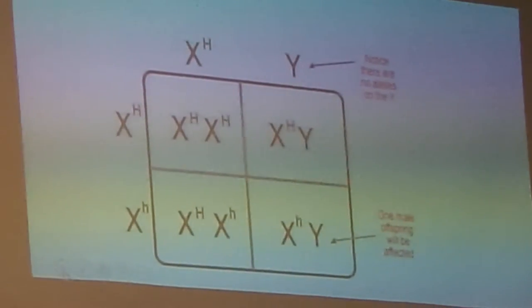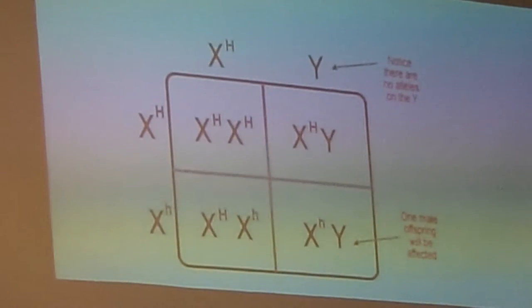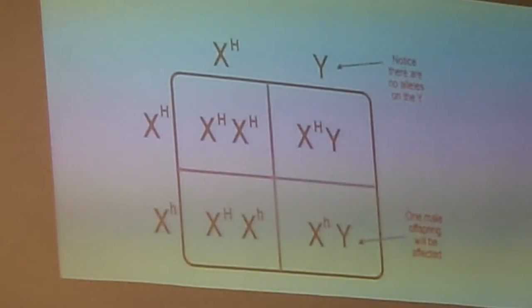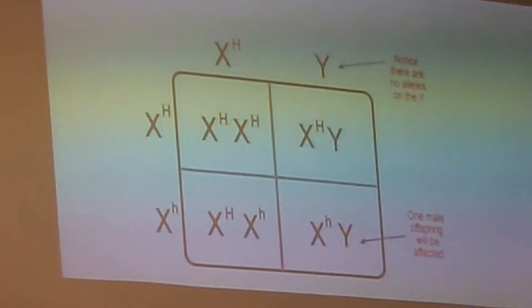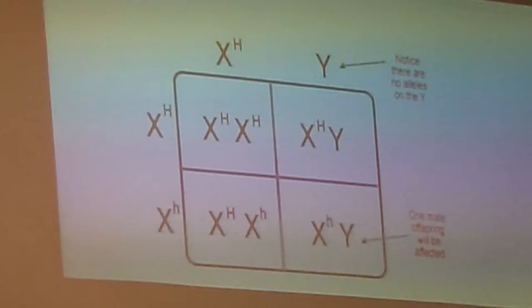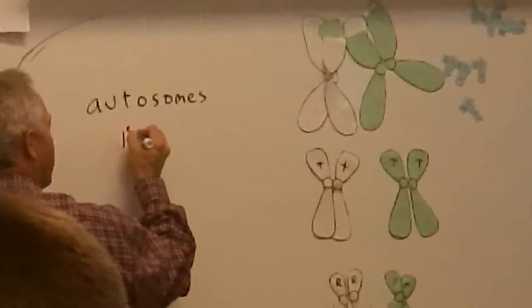Let's go on to sex-linked traits. So a trait is sex-linked if it is carried on the X chromosome. Now, do y'all remember that you have 23 pairs of chromosomes? My example up here on the board only has three pairs, but in actuality, in a human cell, there are 23 pairs. Now, the first 22 pairs we call autosomes.